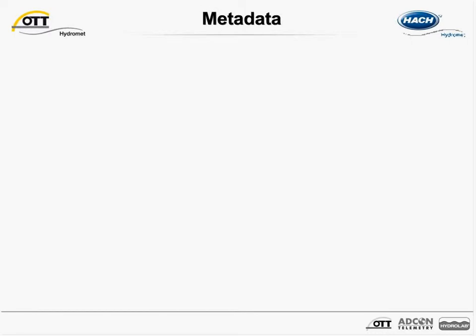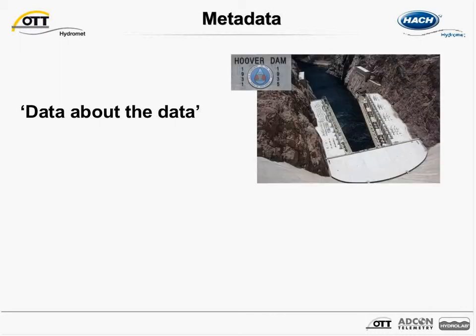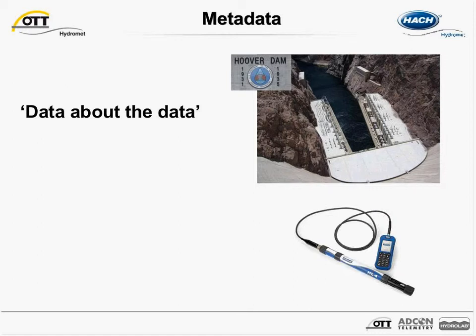The third reason the HydroLab HL4 generates data you can trust is the amount of metadata associated with a measurement. One of the best definitions of metadata is simply "data about the data." A good example from everyday life is a personal digital photograph collection — a time and date stamp for a photograph is metadata, as it tells you when the photograph was taken. In a folder of vacation photographs, you can recall exactly when you visited the Hoover Dam, for example. When it comes to water quality data, time and date stamps are also simple examples of metadata.